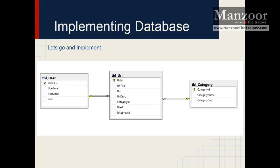In the user table, I have user id as the primary key, user email which acts as the username, password, and role which says what type of user it is. In the URL table, I have url id, url title, the actual URL, and description. Category id is a foreign key indicating which category this URL belongs to, and user id is a foreign key indicating who uploaded or submitted this URL.